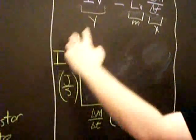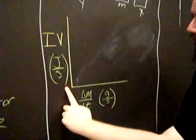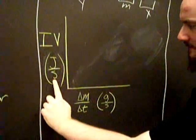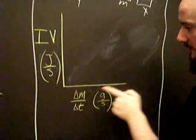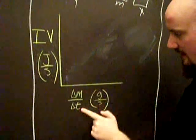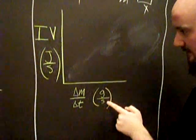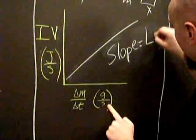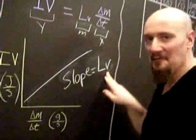So I take this power, plot it on the ordinate, joules over seconds. And then on the abscissa, the change in mass over the change in time, grams over seconds. I could plot a line. The slope gives me what I want, the L_V.